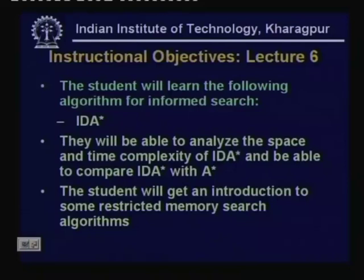The instructional objectives of today's lecture are the following. The student will learn the algorithm IDA*, which is an algorithm for informed search. They will be able to analyze the space and time complexity of IDA* and understand the difference between IDA* and A*. The student will also get an introduction to some restricted memory search algorithms like RBFS — recursive best-first search — as well as MA*, though we will not cover these algorithms in great detail.